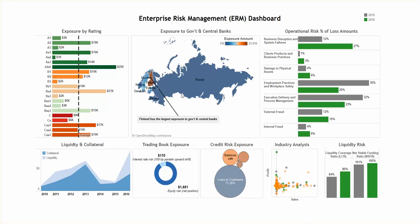Moving on to Operational Risk Percent of Loss Amounts. This is a bar chart that shows the operational risk losses for years 2015, which are in dark gray, and 2016 in green. The risk losses are divided into operational risk loss types, such as internal fraud and external fraud, etc.